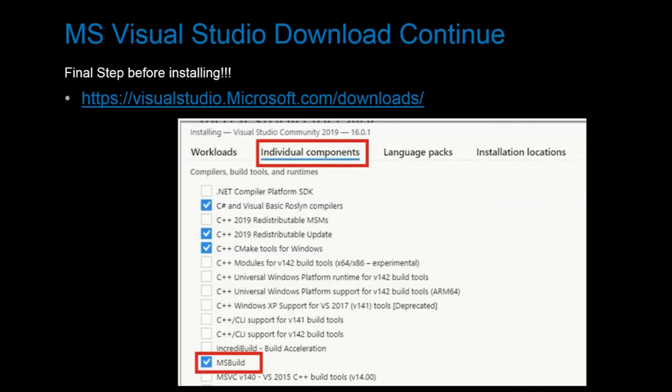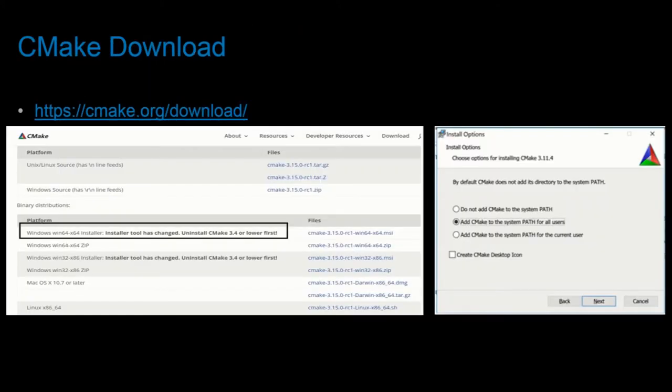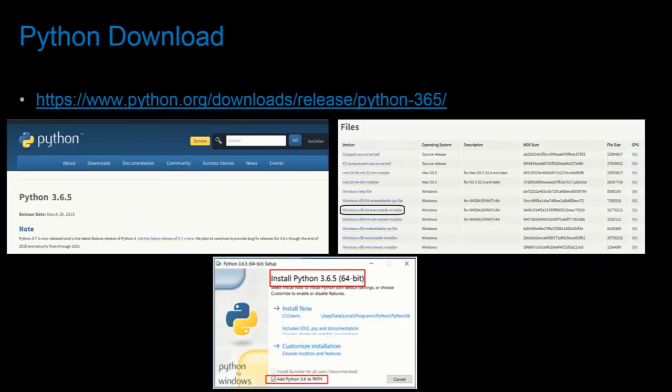Once you've completed the Visual Studio installation, proceed to installing CMake by navigating to the following website. You'll want to download and install the version associated with x64-bit, and make sure that the 'Add CMake to the system path for all users' option is ticked during installation — this should be a relatively quick installation. Finally, navigate to the following Python URL to install Python 3.6.5, and make sure the 'Add Python 3.6 to path' option is ticked during installation.